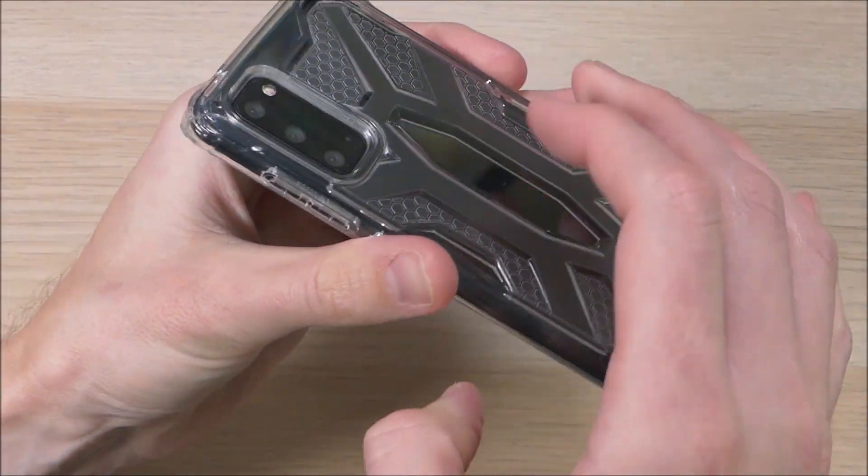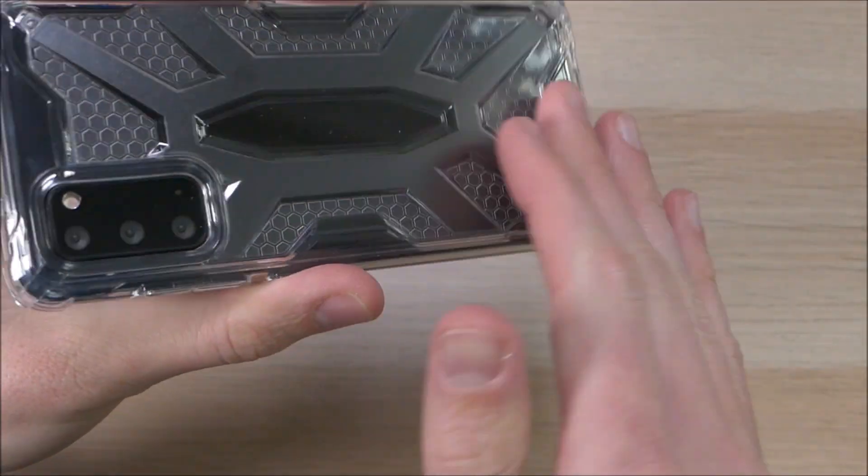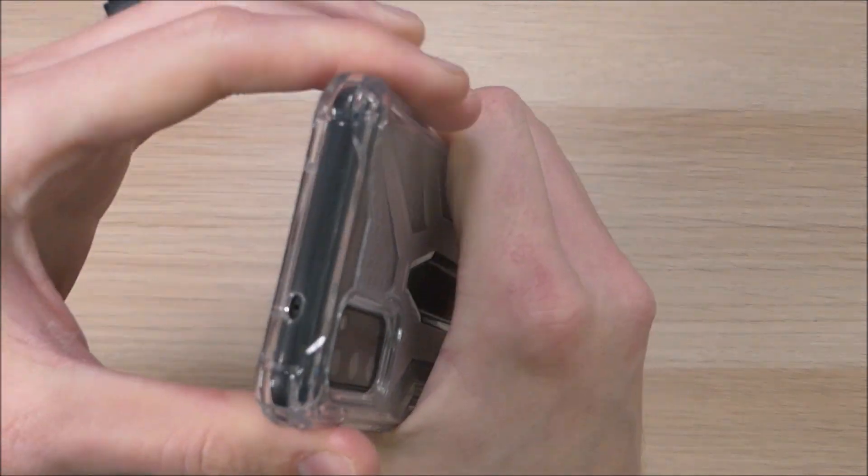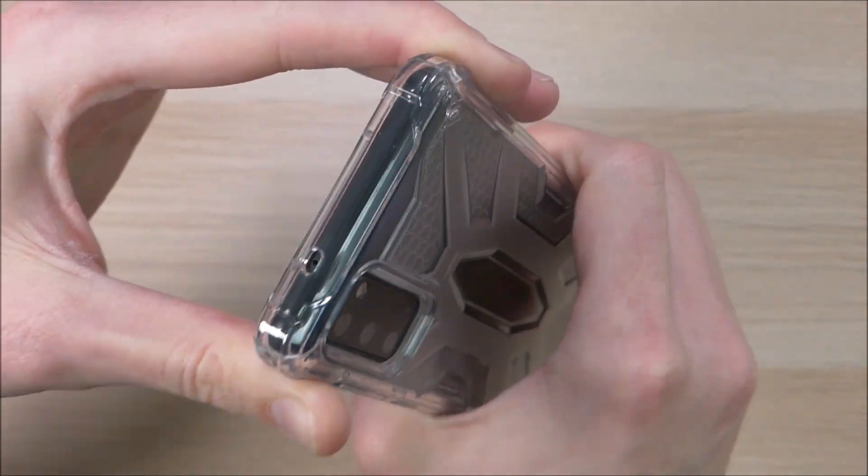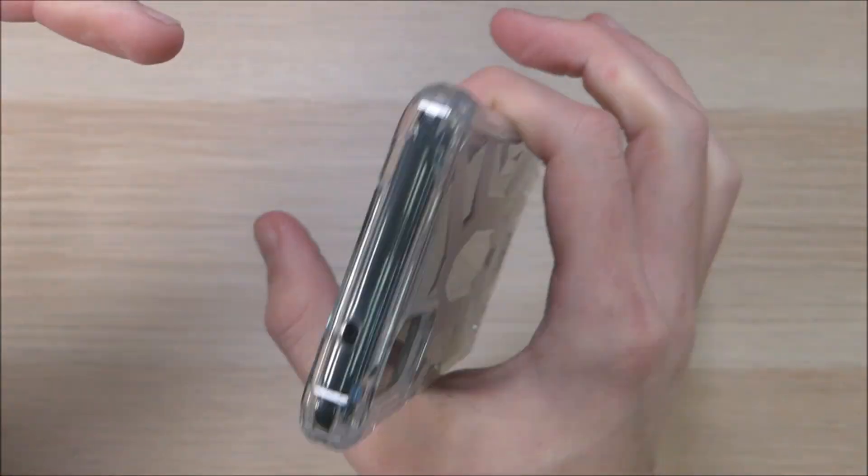There are a couple of features we want to point out today. Here on the back we do have this textured grip so it's not a flat surface, so it does make it a little bit easier to hold it in your hand. Here on the side it is that softer TPU so it does make it a very grippable surface and it's not going to be sliding out of your hand.